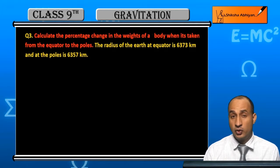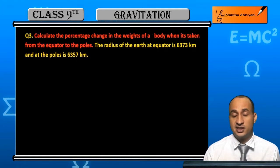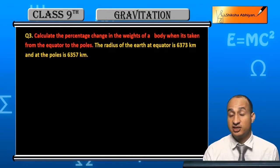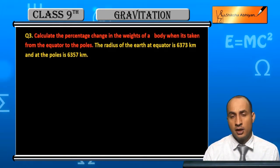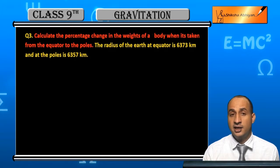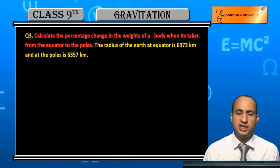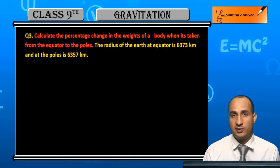Why does the weight change? Because of gravity. Gravity is more at the poles and less at the equator, so the weight at the poles will increase. To find the change in weight, we simply find the same percentage change in gravity.